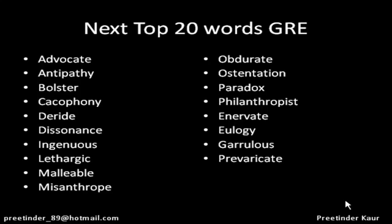The next word is prevaricate, which means deliberately ambiguous or unclear. We already discussed the word equivocal, so a person who is intentionally equivocal is prevaricating.